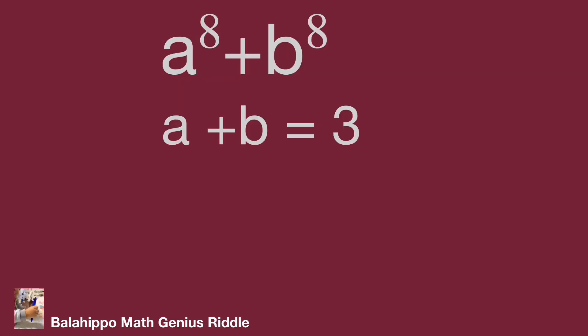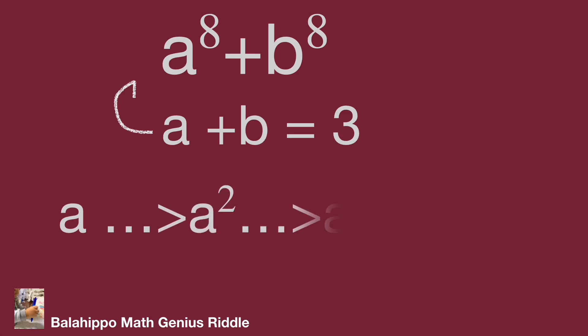The question is to find the value for a power of 8 plus b power of 8. We know the first information: a plus b equal to 3. To get a power of 8 from a, we think: a squared equals a squared, then square a squared to get a power of 4, and then a power of 4 squared equals a power of 8. Let's find the result from this direction.